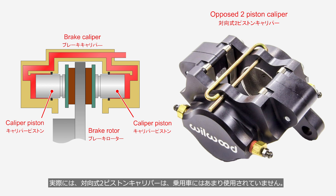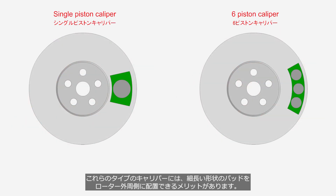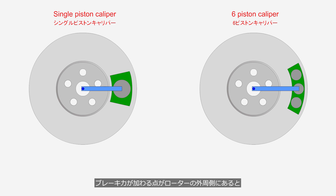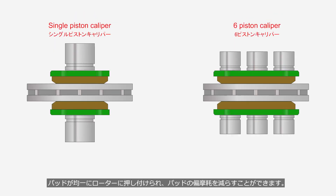In reality, opposed two-piston calipers are not commonly used in passenger cars. Generally, passenger cars use four-piston or six-piston calipers, while in large SUVs and racing cars, eight- to twelve-piston types are also employed. These types of calipers have the advantage of being able to place elongated pads on the outer circumference of the rotor. When the point where the braking force is applied is on the outer circumference of the rotor, it can generate greater braking force with the same hydraulic pressure. Additionally, since the pads are pressed by multiple pistons, they are uniformly pressed against the rotor, reducing uneven wear on the pads.